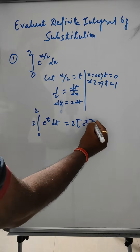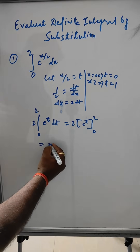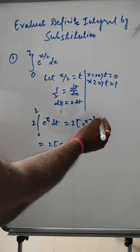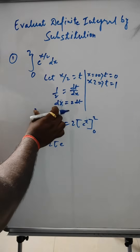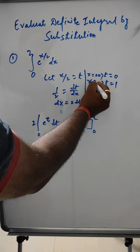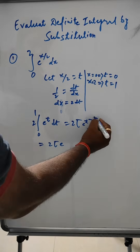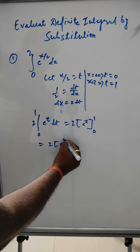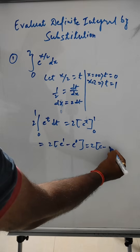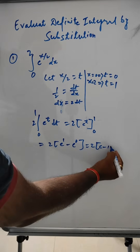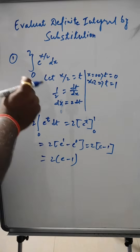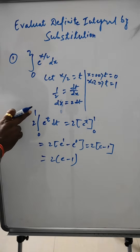Evaluating: 2[e^t] from 0 to 1. When x = 2, t = 1, and when x = 0, t = 0. So we get 2(e^1 - e^0) = 2(e - 1). The answer is 2(e - 1).